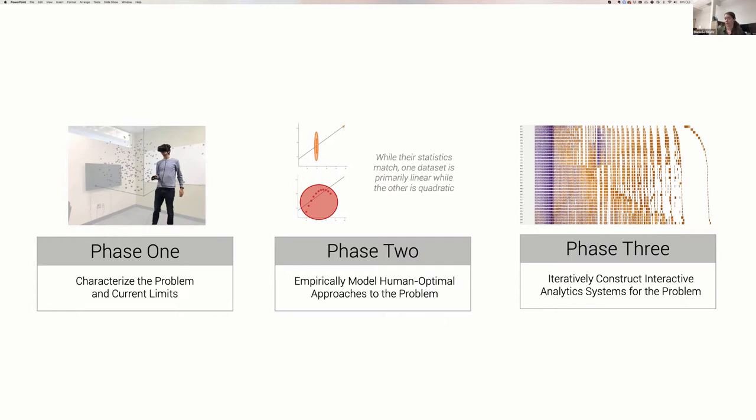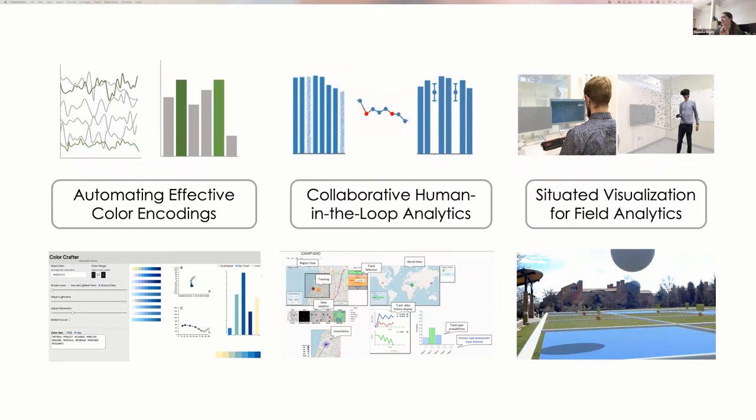We've applied this process across a broad variety of applications. I'm going to focus today on three specific problem areas. The first, automating effective encoding design, is a problem that pervades across domains. This is where I'll spend probably most of my time. The second is in collaboration with the US Air Force, coupling visualization and interactive machine learning for remote sensing. The final thread explores immersive analytics.